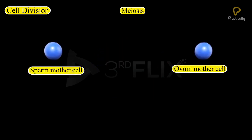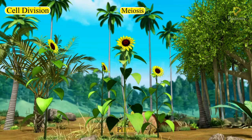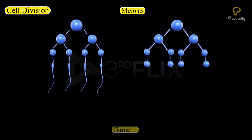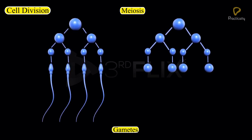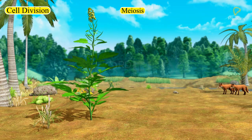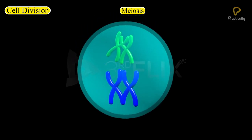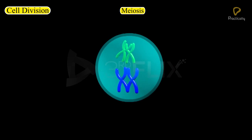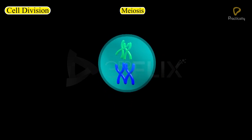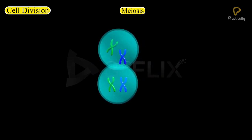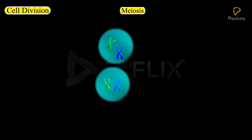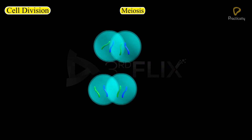Specific cells of reproductive organs or tissues in animals and plants divide to form gametes. After fertilization, they give rise to offspring. The cells in the reproductive organs divide by a different process called meiosis, which involves two consecutive divisions.